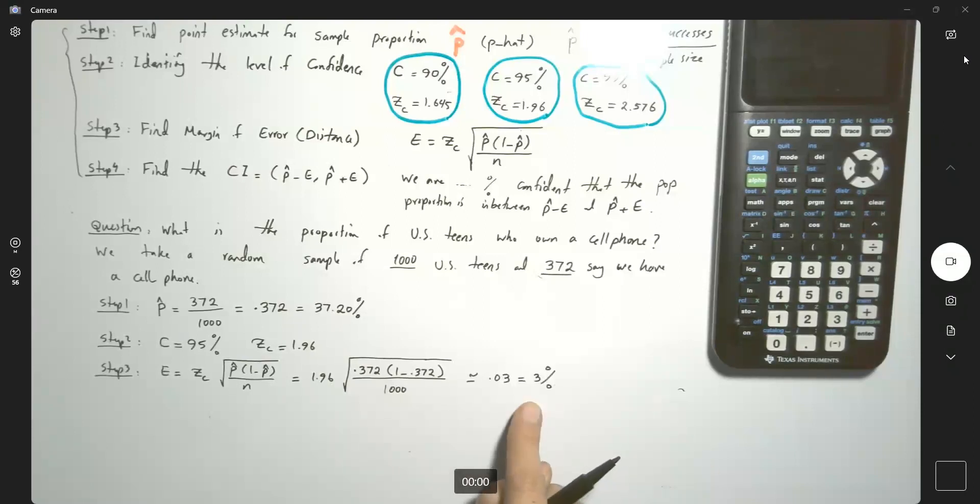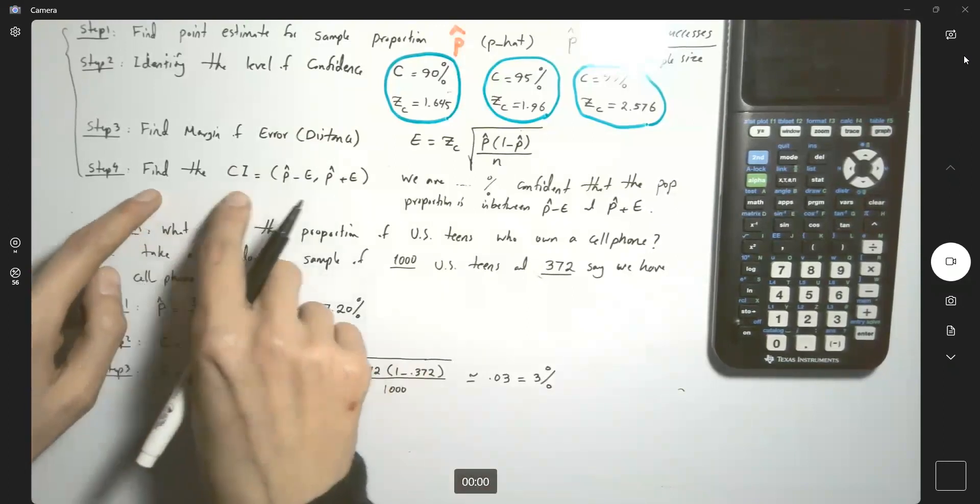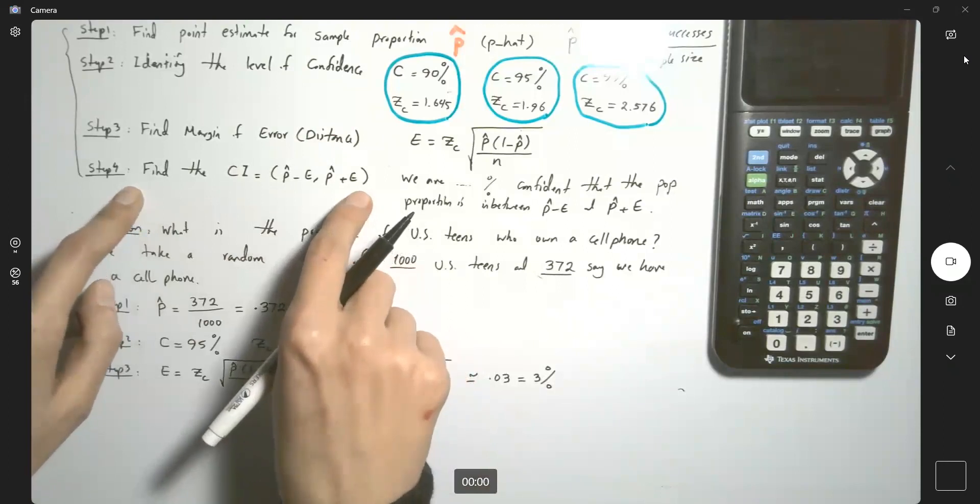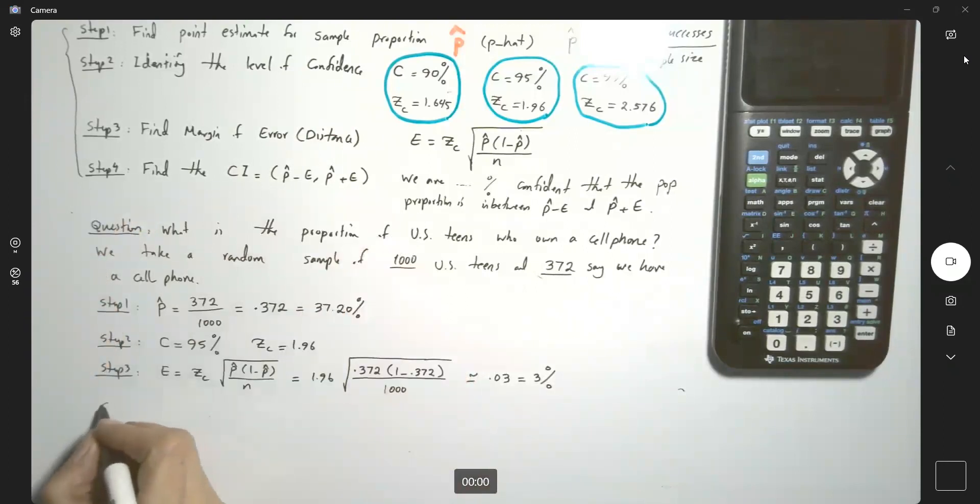So the distance from 37.20% is going to be 3%. It helps us to finally write the confidence interval. So step four, CI is equal to P hat minus E to P hat plus E. You already calculated the P hat, 0.372 minus 0.03 and 0.372 plus 0.03, which is going to be our confidence interval.